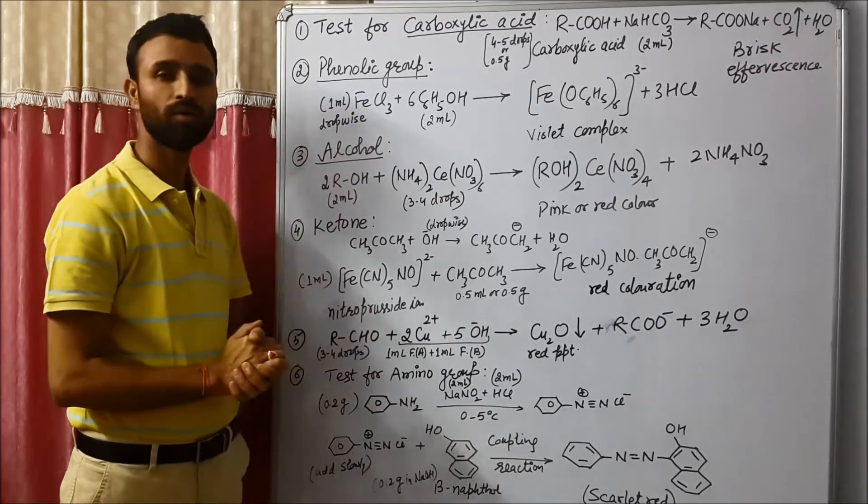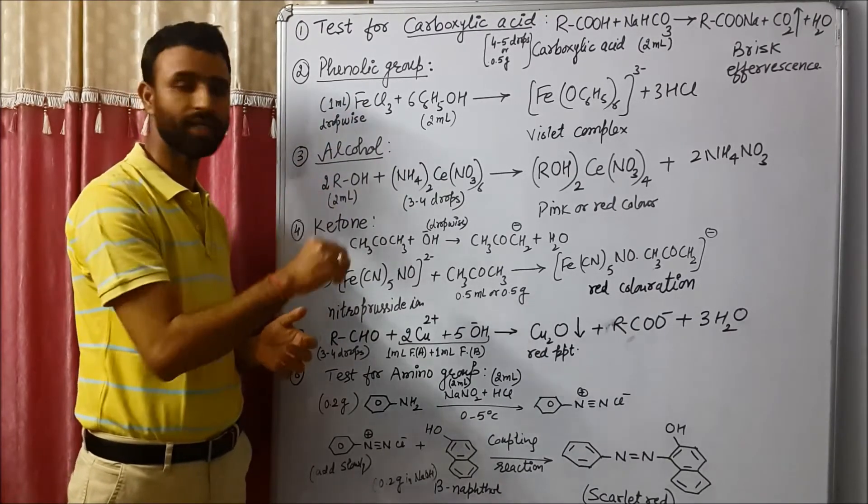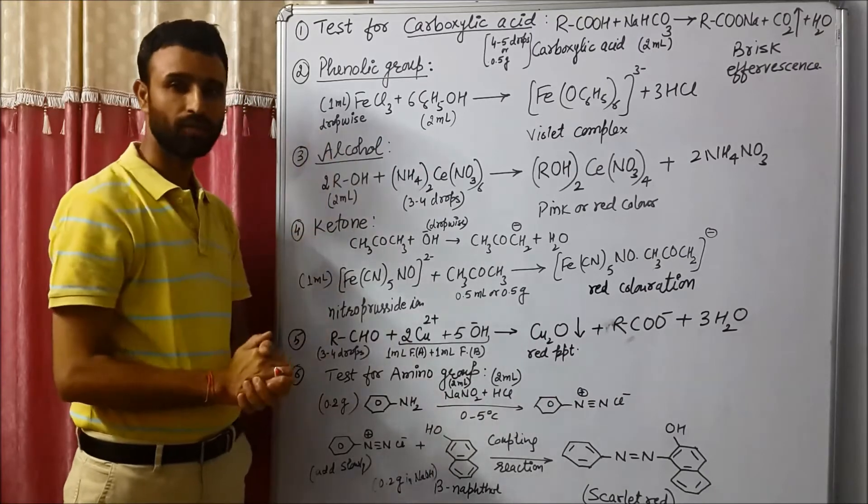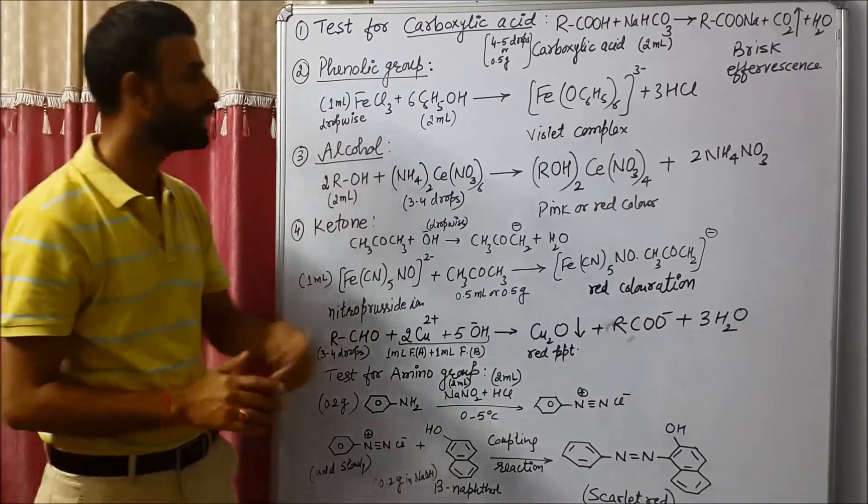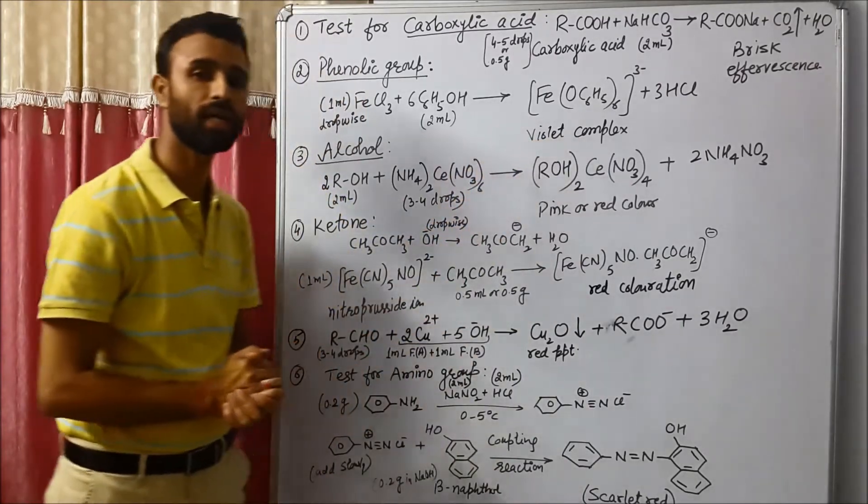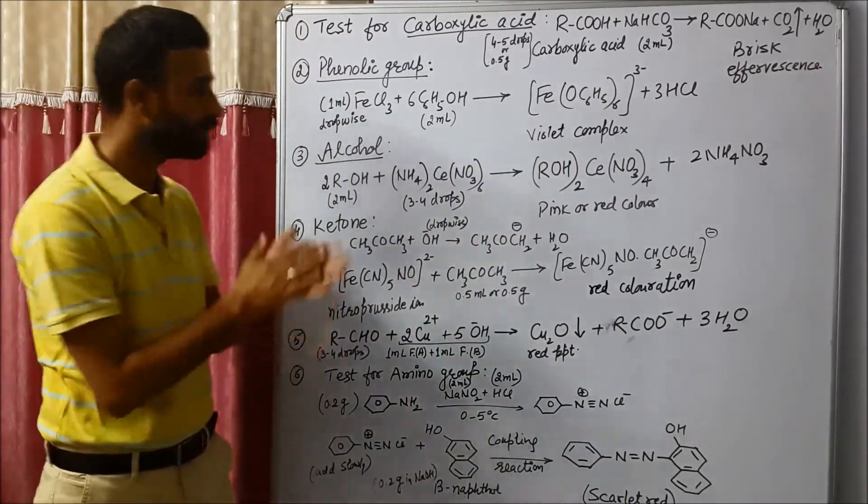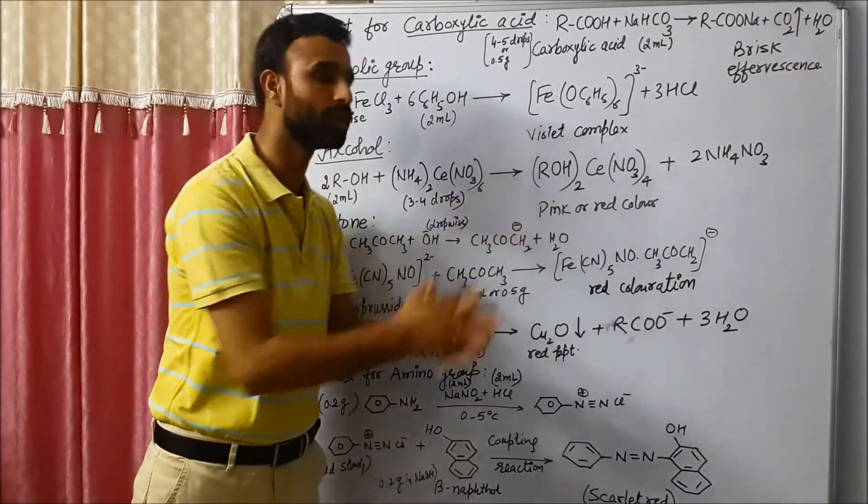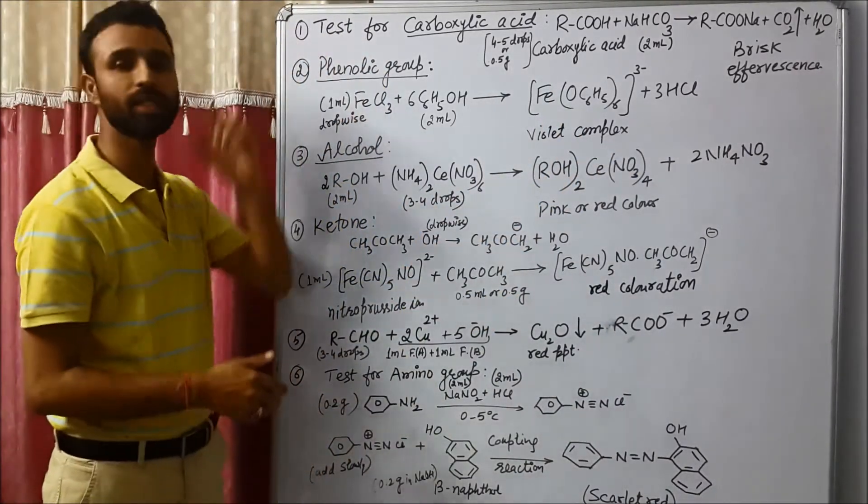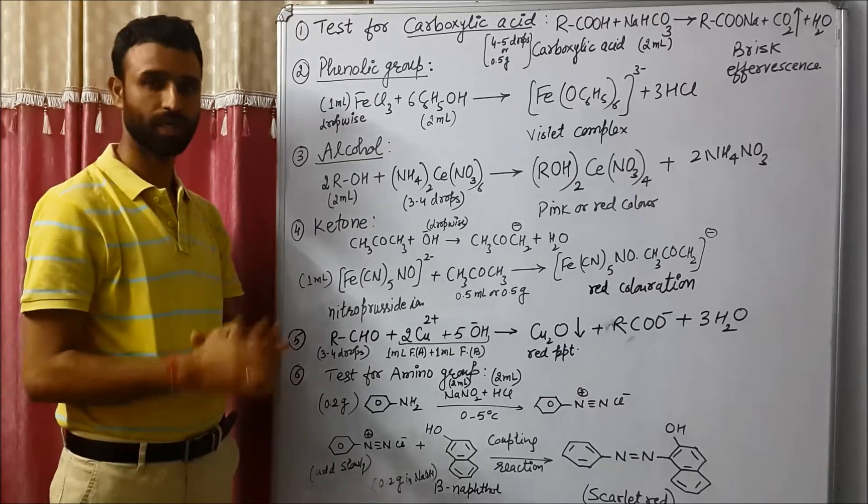So that reagent is given to you. And 1 ml of ferric chloride, but we add it drop-wise. When we add neutral ferric chloride drop-wise, we see the formation of violet complex. And if this violet colored complex is observed, that means phenolic group is present.